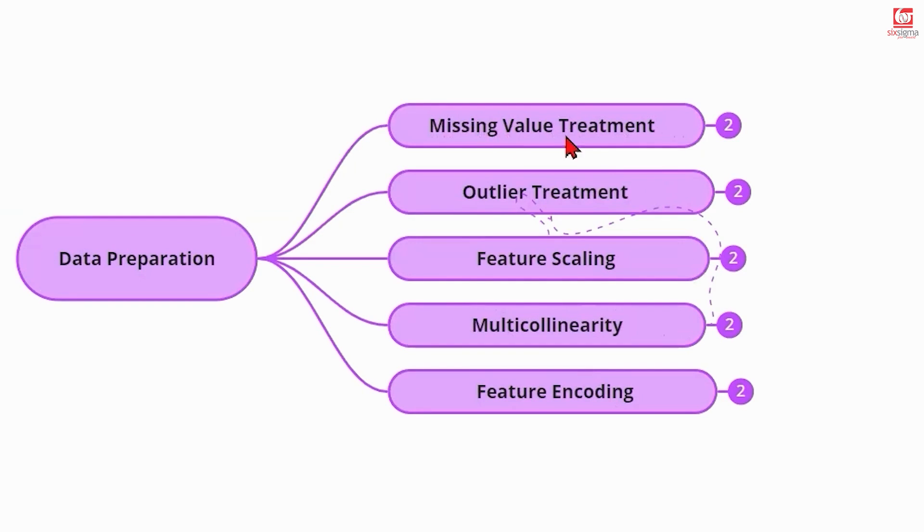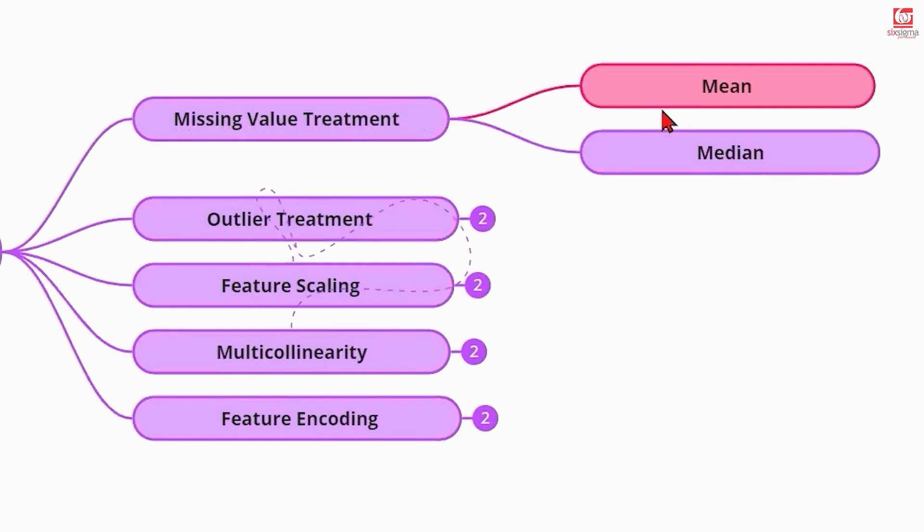So when you have data which is incomplete, you have some missing values in the data. The common approaches to missing value treatment suggest that if it's a numerical variable, you can go for a mean or you can go for a median. Now we've used some color coding here for a reason. If you're using mean as a missing value treatment for a numerical feature, then you should ensure that you do not have extreme values in the data, which is actually the next step, the outlier treatment. So you need to be careful without checking the presence of outliers. You should not be treating missing values with the mean. Irrespective of whether you have or you do not have outliers in the data, you can always treat the missing values with the median. That's what the common approach suggests. But this approach again has some pitfalls, and we'll talk about those as we progress.